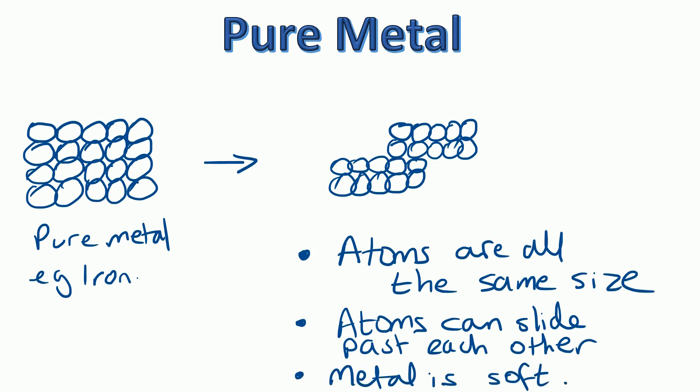And that means that the metal is soft. Very often on an exam you might be asked why pure iron is too soft to use in everyday contexts. And the answer would be that the atoms are all the same size so they can slide past each other and that's what's making the metal soft.